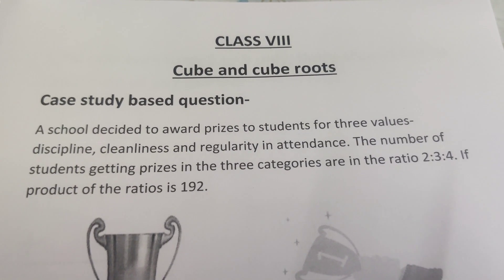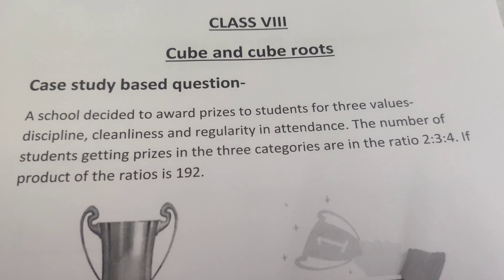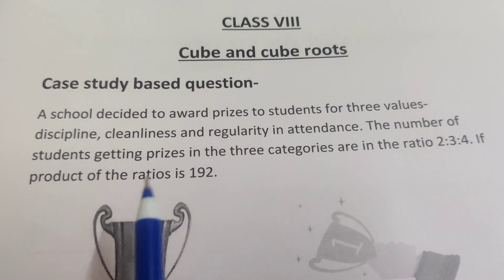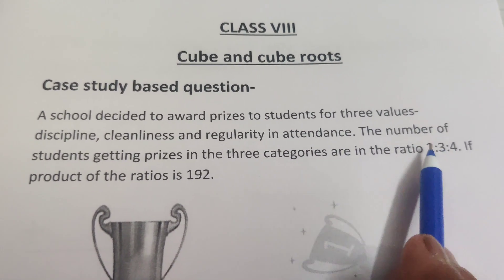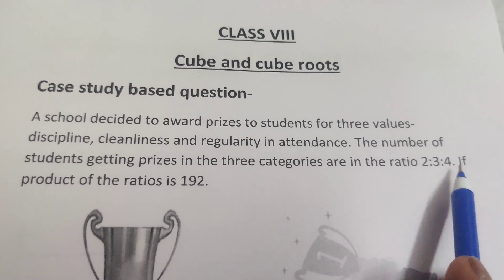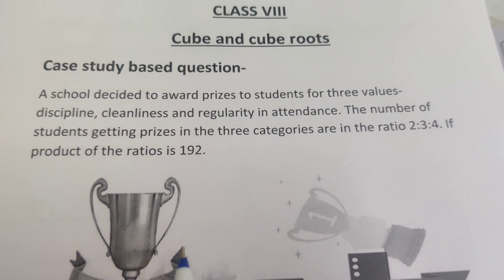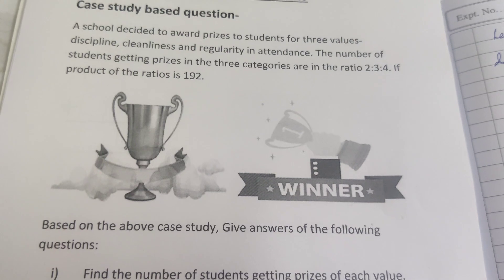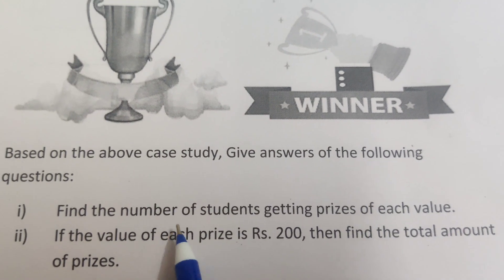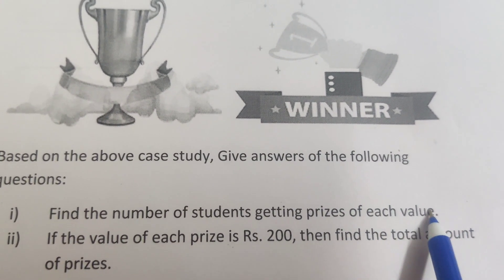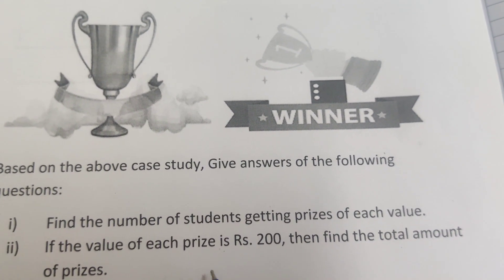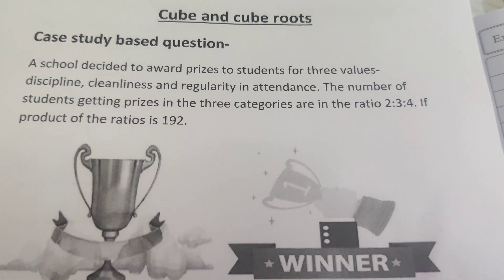This is a case study based question for Class 8, Chapter: Cube and Cube Root. A school decided to award prizes to students for three values — discipline, cleanliness, and regularity in attendance. The number of students getting prizes in the three categories are in the ratio 2:3:4. If the product of the number of prizes is 192, answer the following: first, find the number of students getting prizes for each value; second, if the value of each prize is rupees 200, find the total amount of prizes.